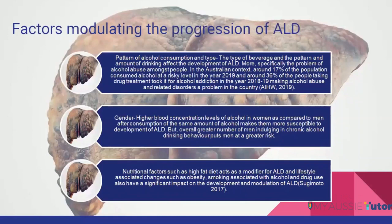What are the factors that moderate the progression of alcoholic liver disease? First is the pattern and type of alcohol consumption. The type of beverage, pattern, and amount of drinking affects the development of ALD. In the Australian context, around 17% of the population consumed alcohol at a risky level, and around 36% of people taking drug treatment took it for alcohol addiction, making alcohol abuse and related disorders a significant problem.